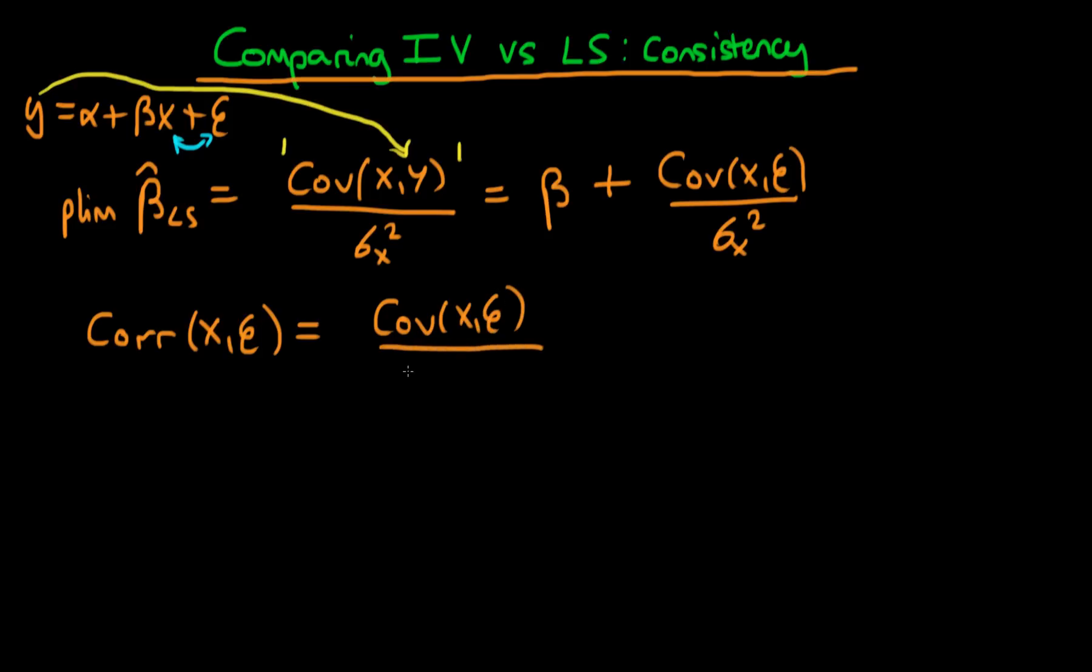The correlation of x and epsilon is defined as the covariance of x with epsilon divided through by the standard deviation of x times the standard deviation of epsilon. And when it's written like this it's very easy to simplify this probability limit up here.